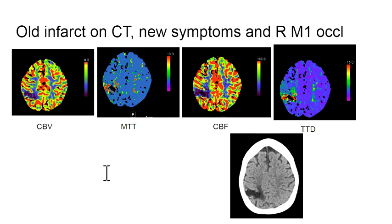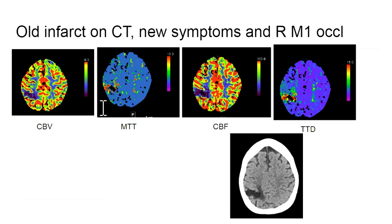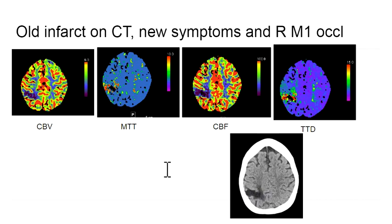Next case: there's an old infarct on CT in the right parietal lobe with new symptoms, and the CTA showed a right M1 occlusion. The question was whether that right M1 occlusion was acute or chronic — it was hard to tell — so we did the CT perfusion. Here's the defect, and looking at CBV versus MTT, you can see the CBV defect and MTT defect are matched, so that is a completed core infarct with no surrounding potentially reversible ischemia. That was an old infarct on the CT.